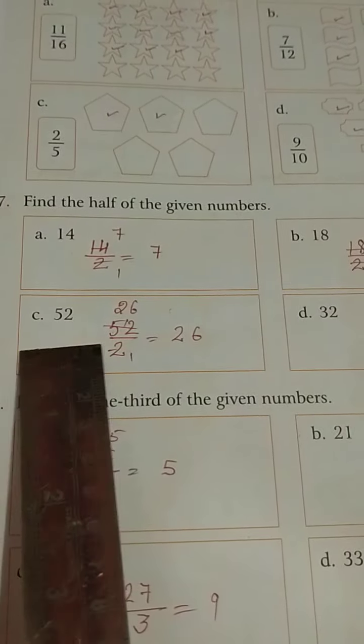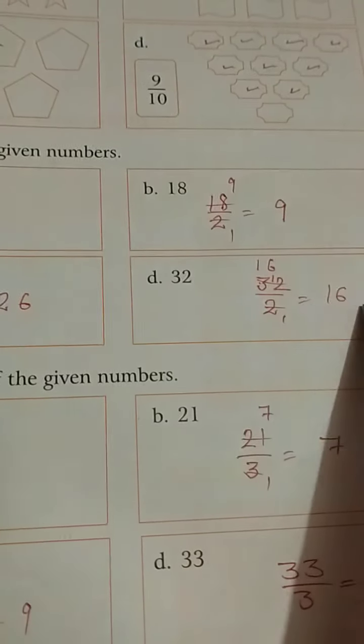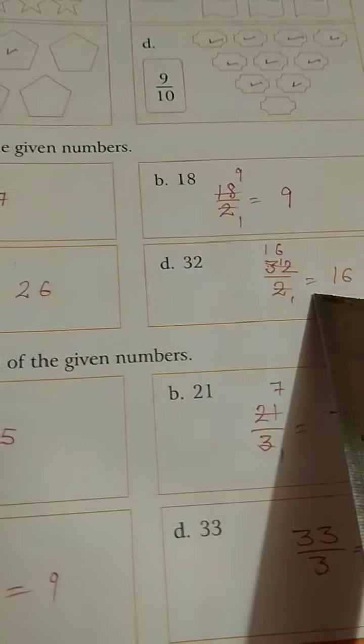Next is 32, 32 divided by 2 means 2 multiplied by 16 is equal to 32, and then we are getting 16. Half of 32 is 16.